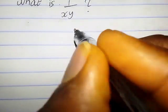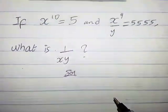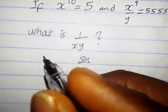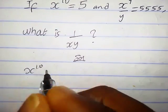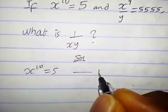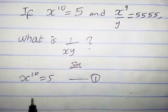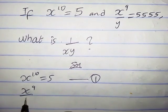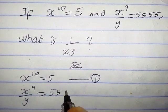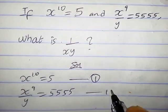Solution: The given assumptions are x raised power 10 equals 5, so we call this equation 1. And the second equation is x raised power 9 over y equals 5555, so let's call this equation 2.